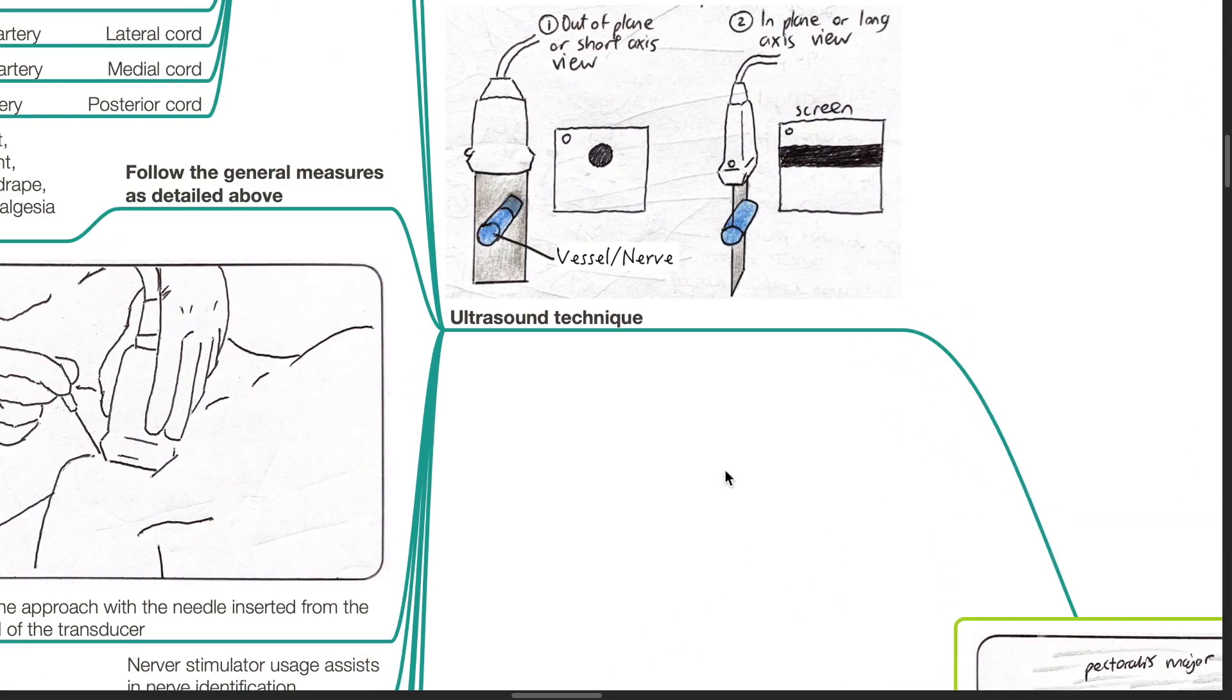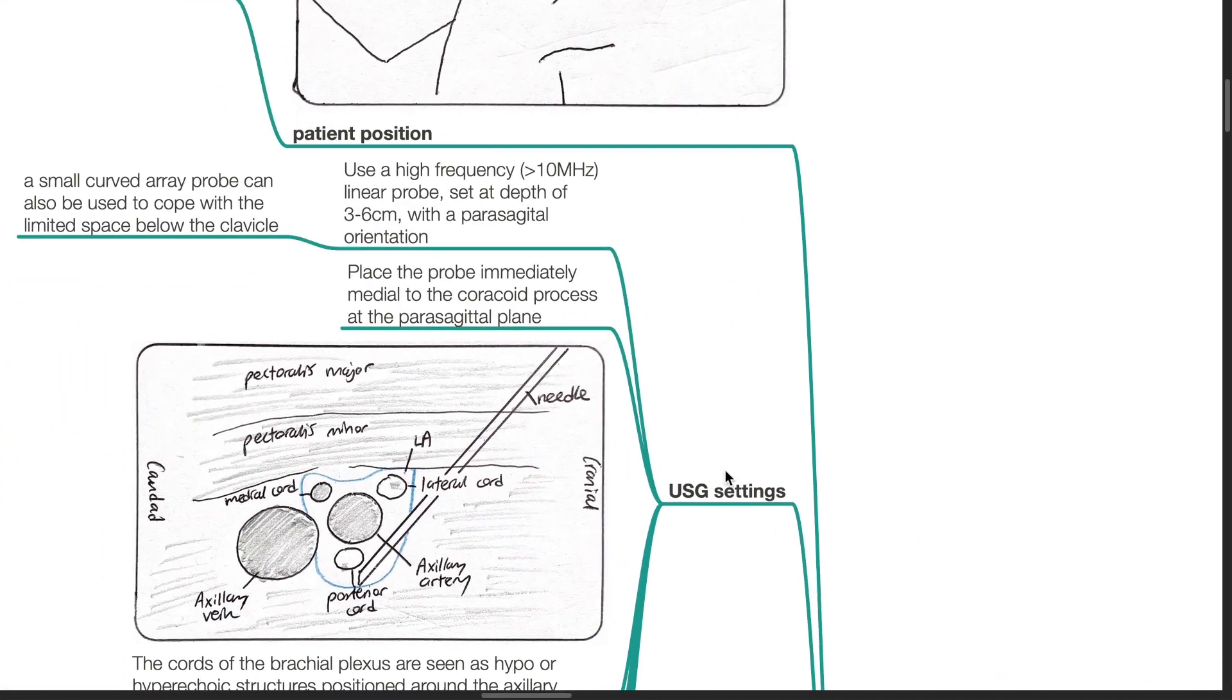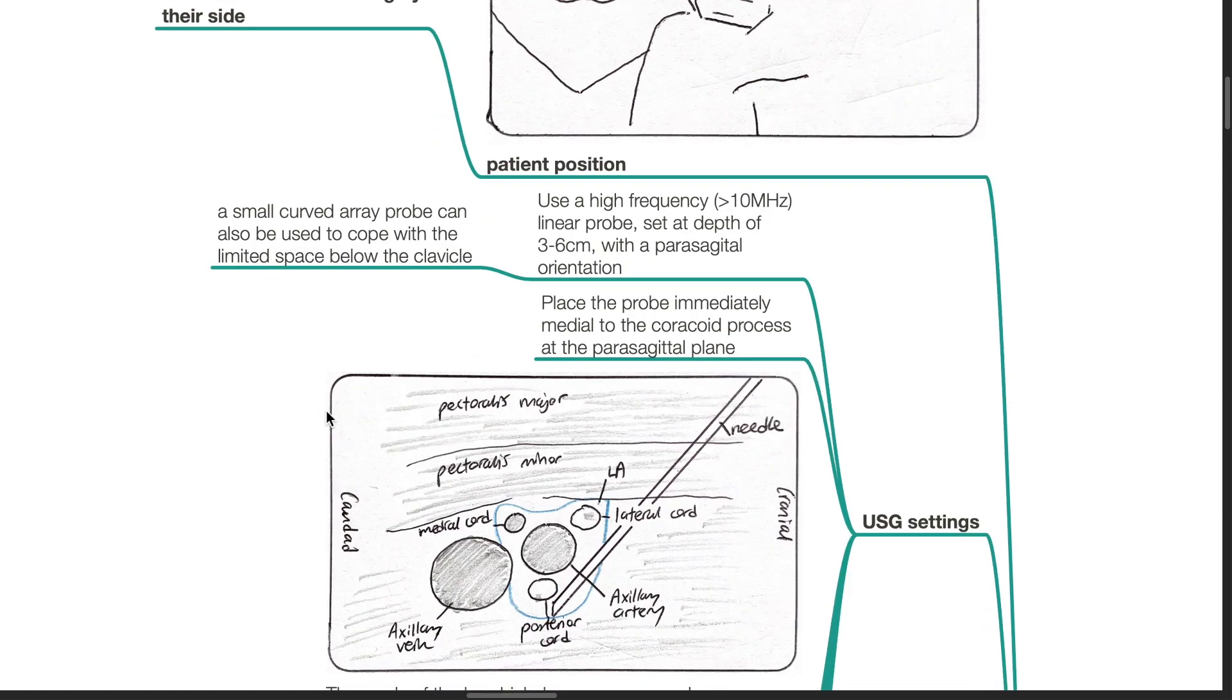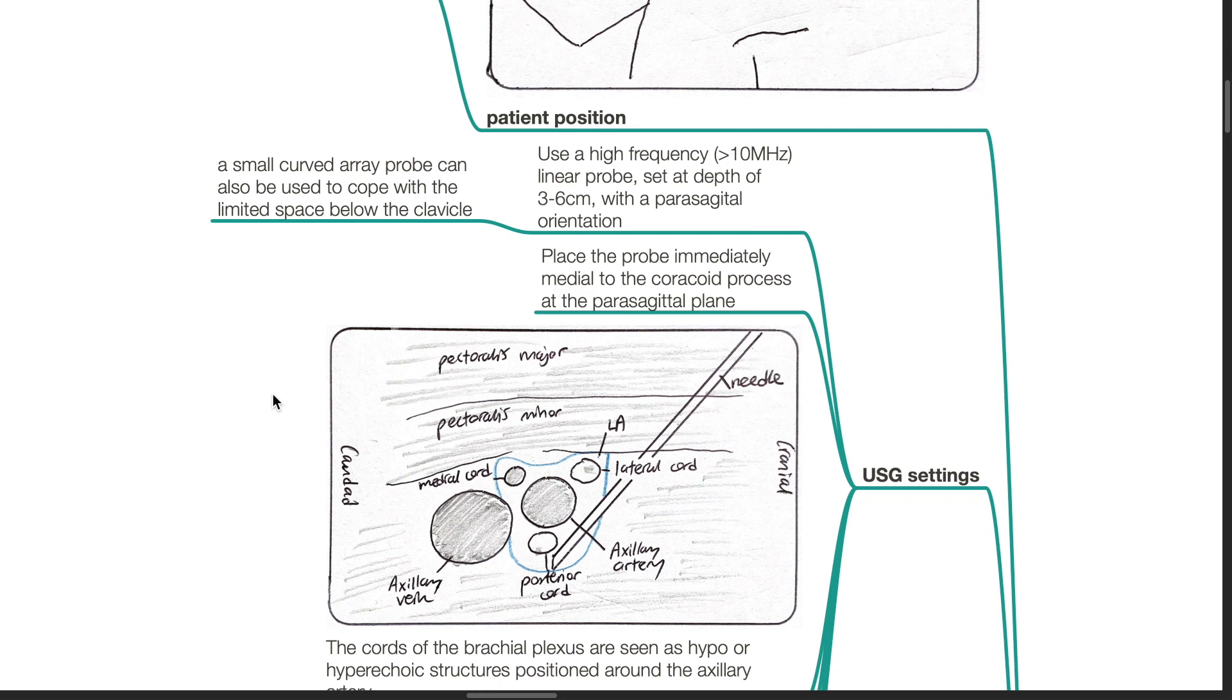Ultrasound technique. Patient position: supine with the arm abducted to 90 degrees or resting by their side. Ultrasound settings: use a high-frequency more than 10 MHz linear probe set at the depth of 3 to 6 cm with a parasagittal orientation. A small curved array probe can also be used to cope with the limited space below the clavicle.